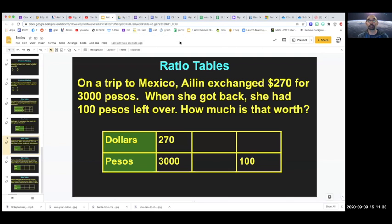Okay, so now let's look at this one. It's a little bit more complicated. On a trip to Mexico, Eileen exchanged $270 for 3,000 pesos. So that's what we have here. She brought $270 American dollars and got 3,000 Mexican pesos for it. When she got back, she had 100 pesos left over. So now she's back in California. She's got 100 pesos. And she wants to figure out how many dollars is that worth.